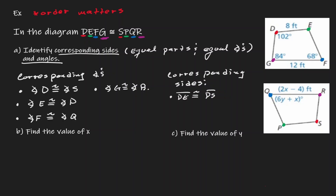Let's list that in here now. EF is congruent to PQ. And now we can just follow that order. Then the next one is FG is going to be congruent to QR. And lastly, GD is going to be congruent to RS.